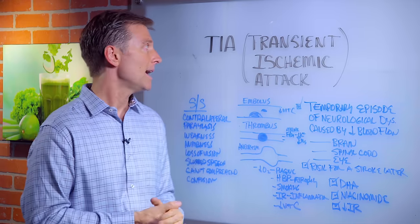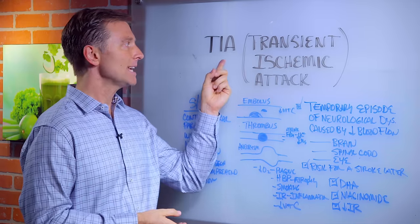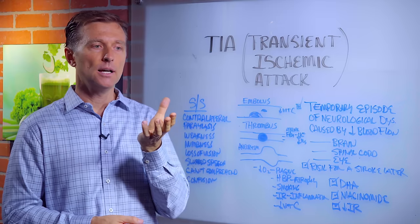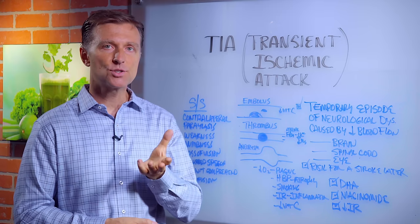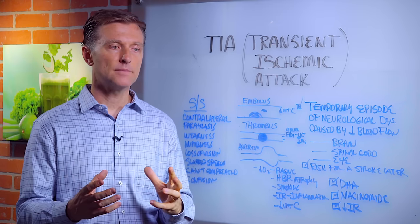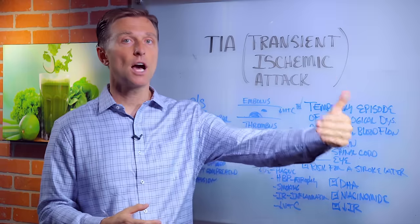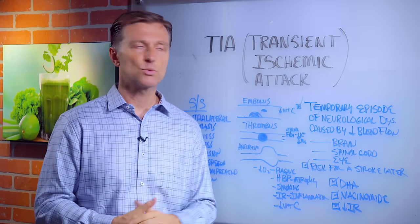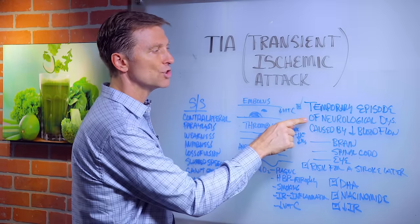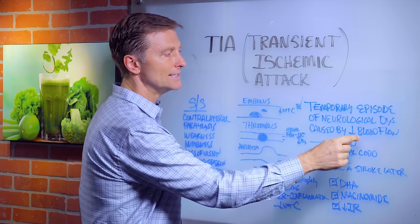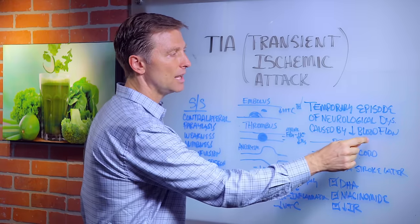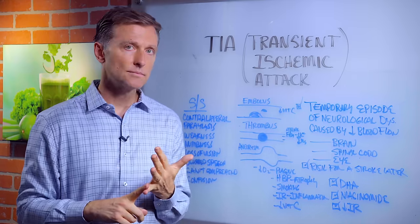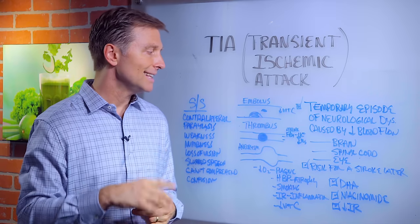In this video, I want to talk about TIA, transient ischemic attack. This is kind of like a mini stroke that's temporary, that kind of tells you that there's a stroke coming. It can be resolved within 24 hours. It's a temporary episode of neurological dysfunction caused by decreased blood flow of the brain, spinal cord, or even in the eye.